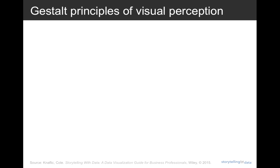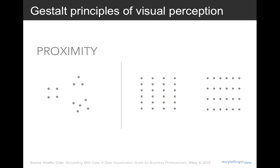Here I'm going to introduce the Gestalt principles of visual perception. The Gestalt School of Psychology set out in the early 1900s to understand how individuals perceive order in the world around them. What they came away with are the principles of visual perception still regarded today as how individuals interact with visual stimuli. The first principle is proximity. We tend to think of objects that are physically close together as belonging to part of the group. One way we can leverage this principle is in tables — simply by differentiating the spacing between elements, your eyes are drawn either down columns or across rows.